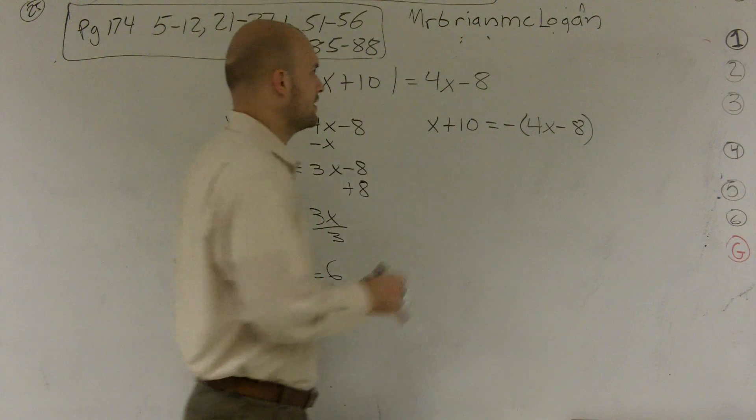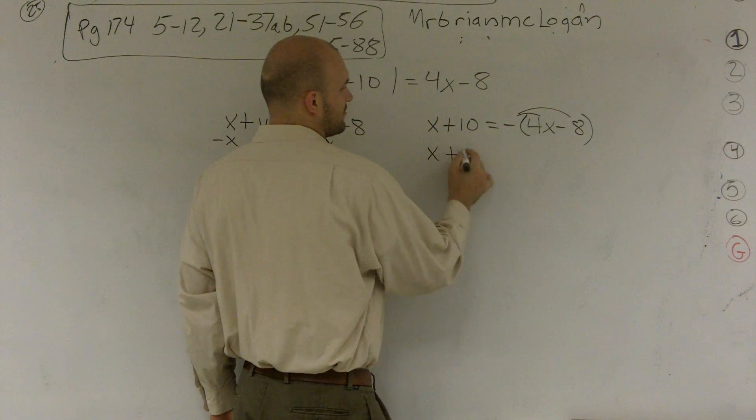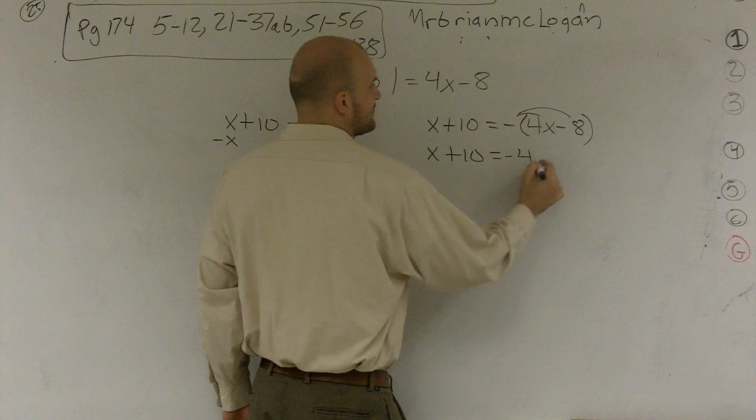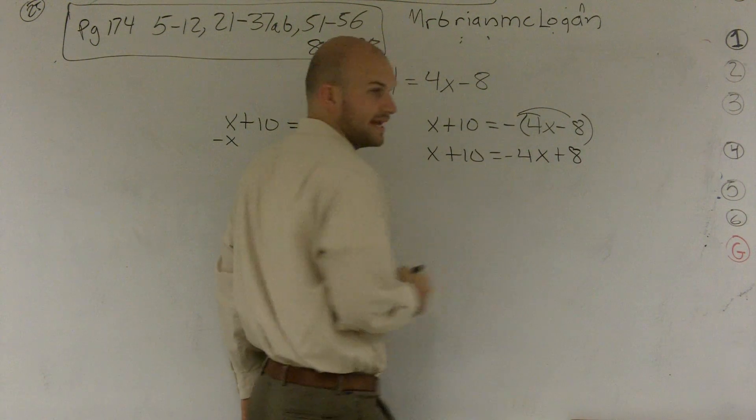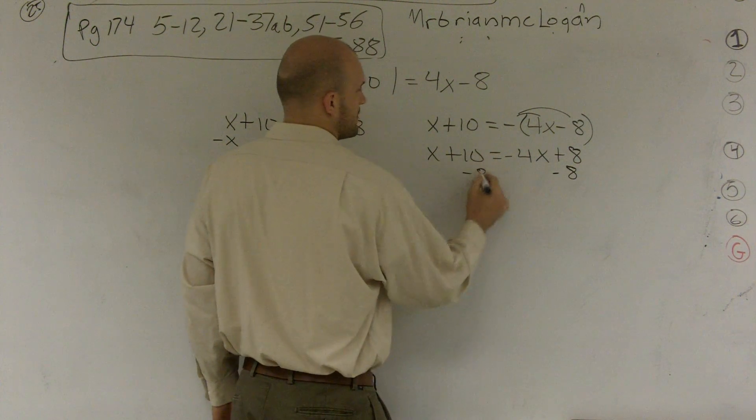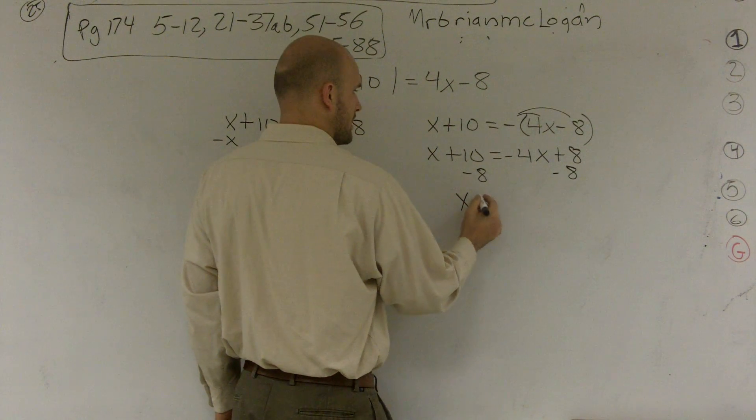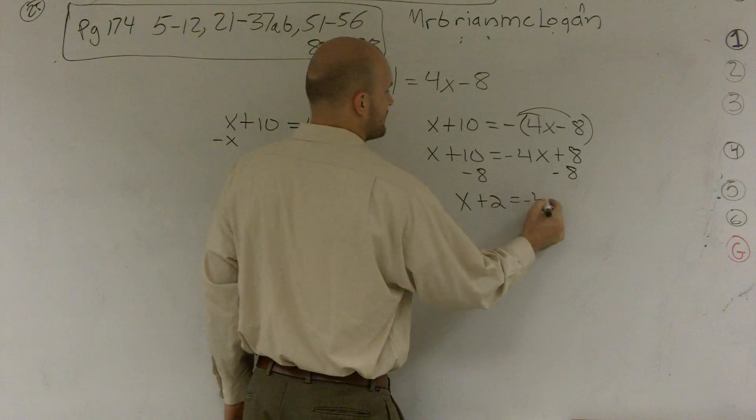Over here, I'm going to have to distribute my negative sign. So I get x plus 10 equals a negative 4x plus 8. Subtract the 8. x plus 2 equals a negative 4x.